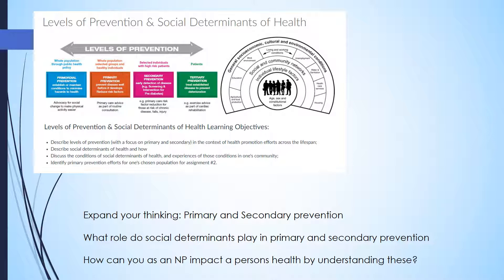Not every patient is going to come in needing primary prevention — they may come in needing secondary or even tertiary. Where do you as a nurse practitioner think you can make your biggest impact on your patient? You really need to hone in on gaining a great understanding of what primary and secondary prevention is, because that's where your bang for your buck is going to come as a nurse practitioner, especially in primary care practice. You also need to understand what role the social determinants play in affecting primary, secondary, and tertiary prevention and how to work with this with a patient.